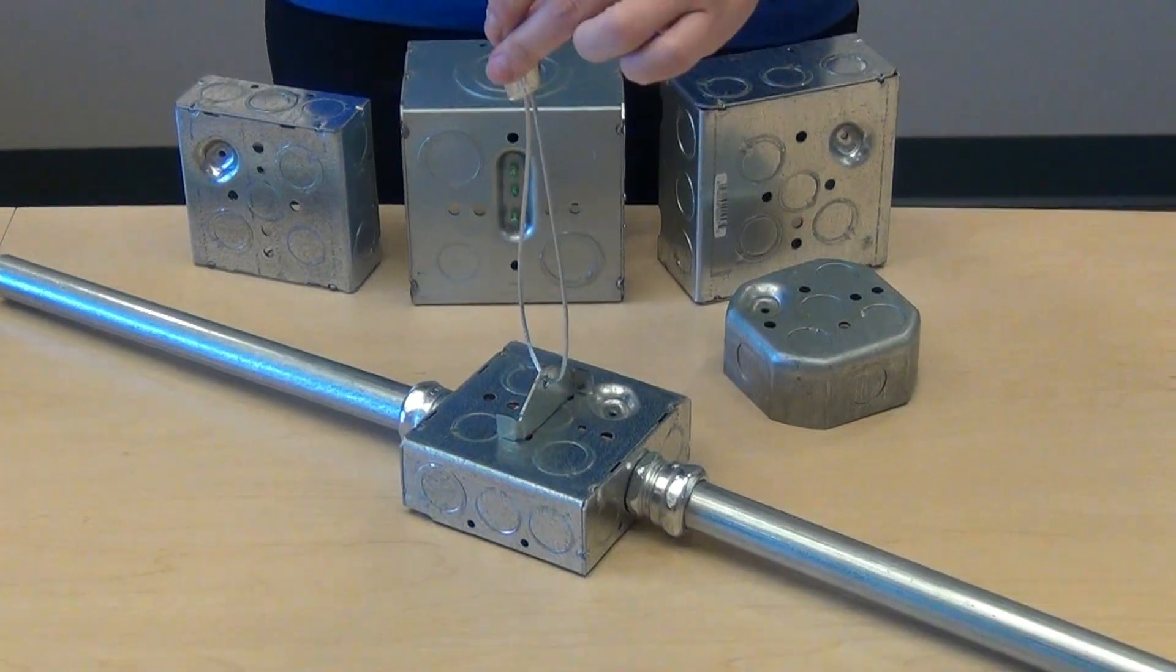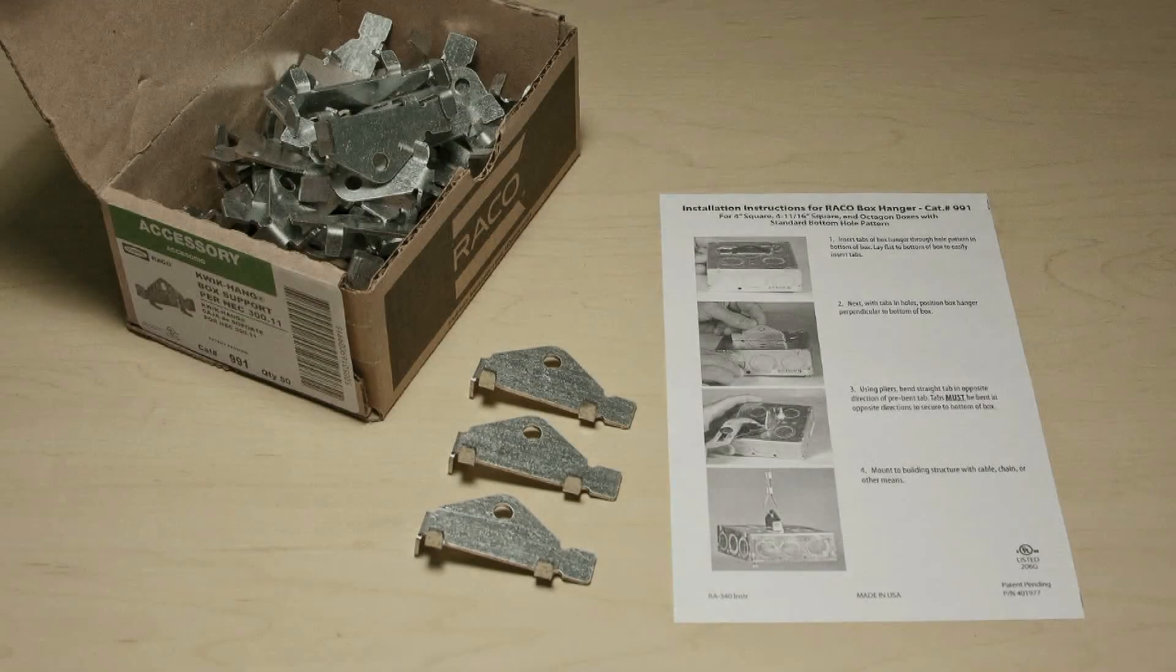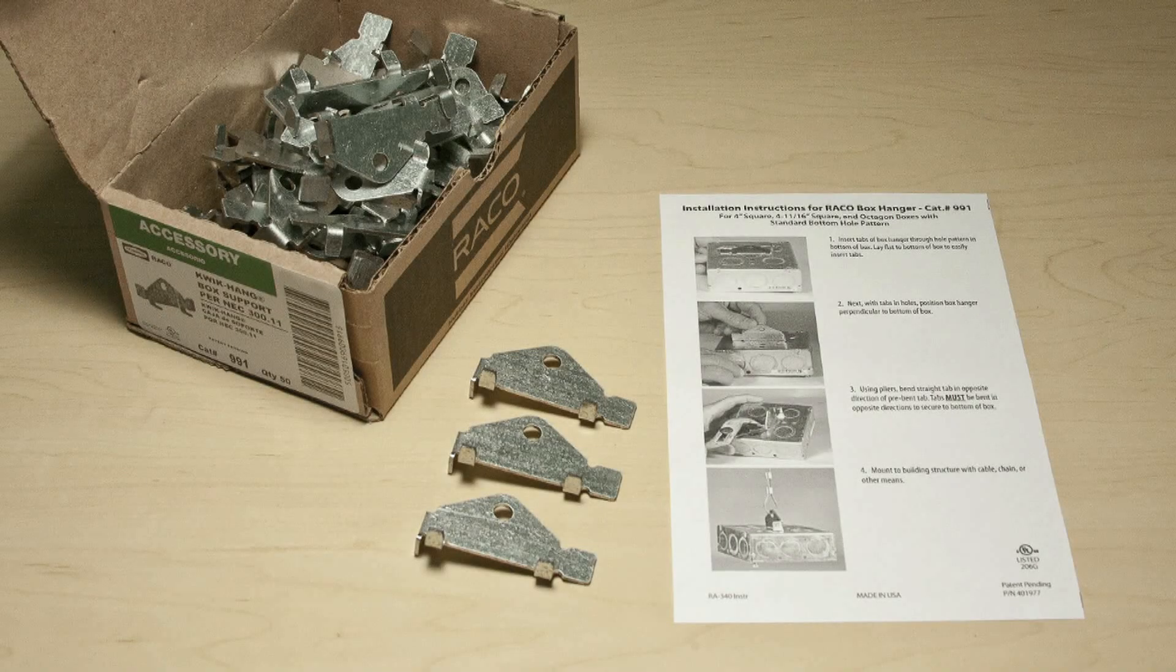The quick hang is supplied in cartons containing 50 supports with an instruction sheet and can be ordered under RECO catalog number 991.